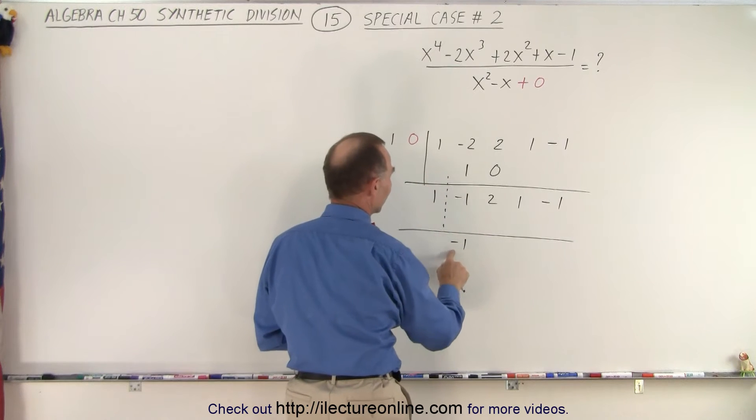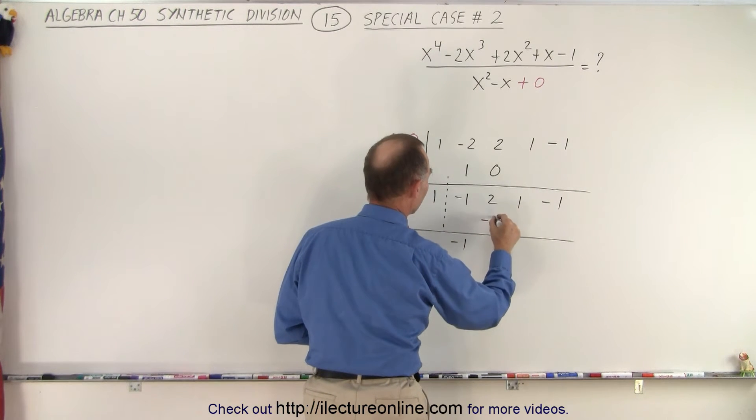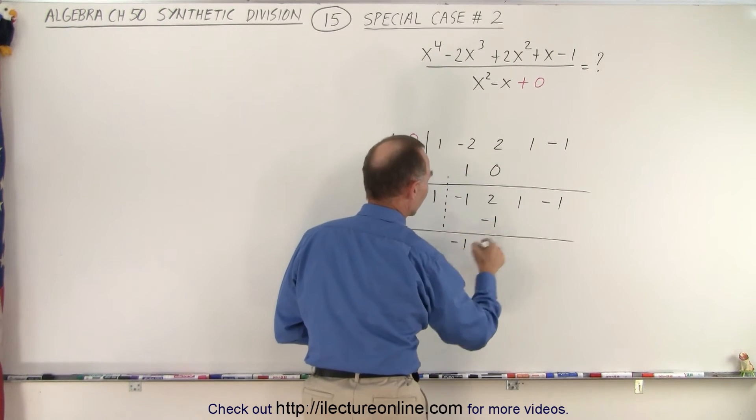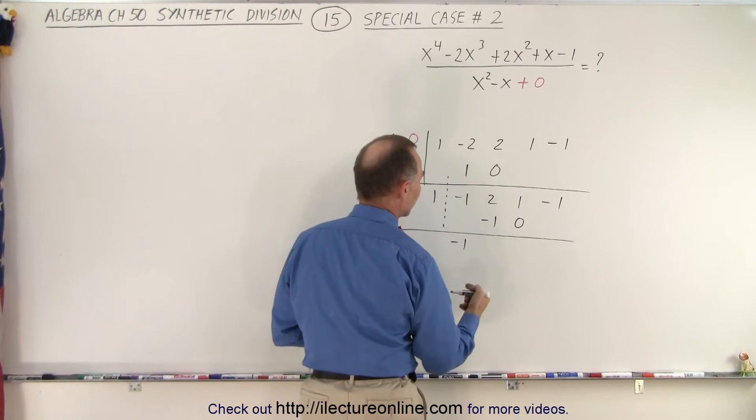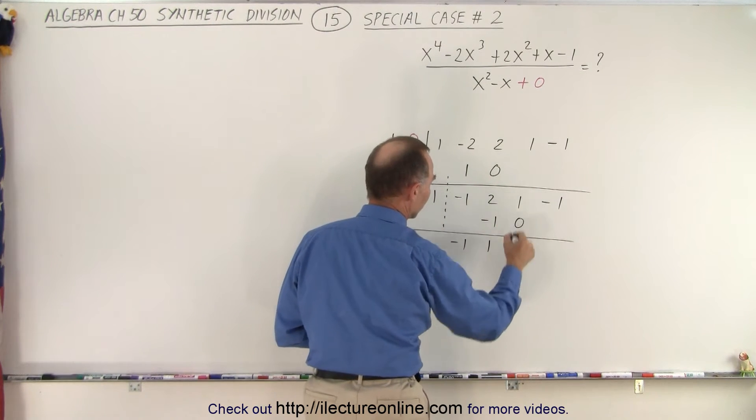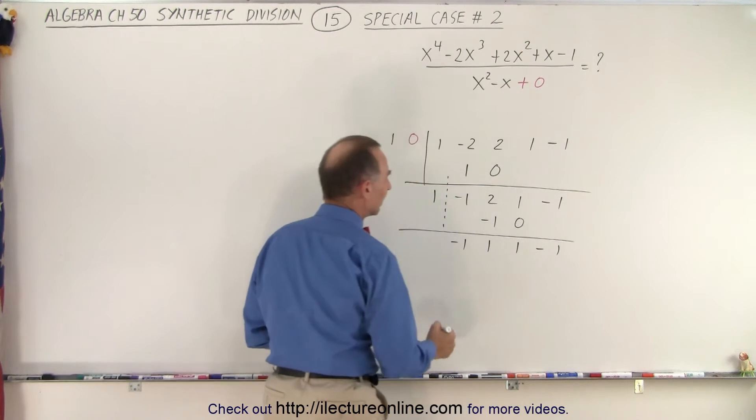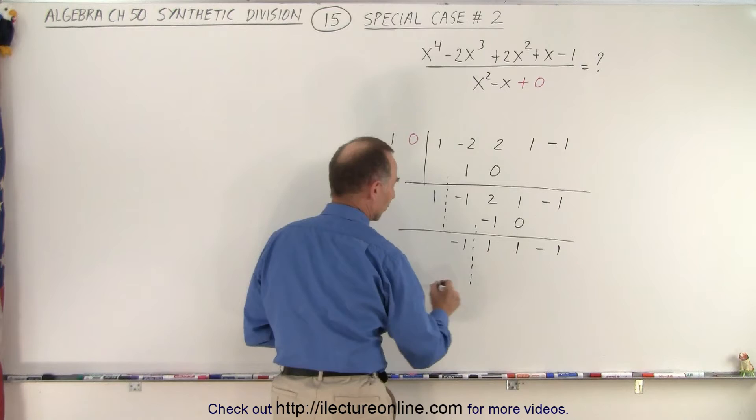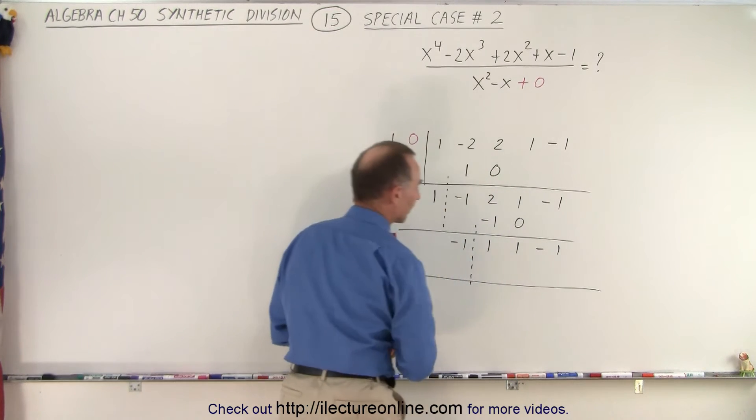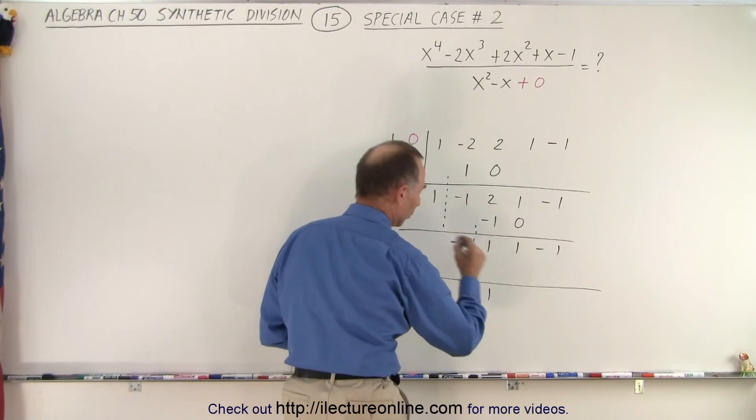And so now you go 1 times negative 1 is negative 1 and 0 times negative 1 is 0. Now we add these two numbers together so this becomes a 1, this becomes a 1, and you drop down the next number, negative 1, and then again you cut it off over here, draw another line, and drop the next number down, 1.